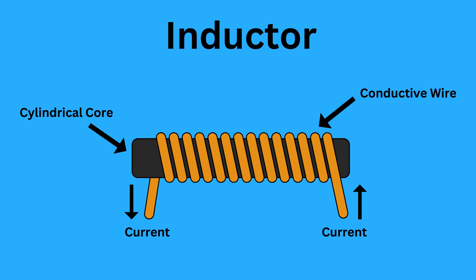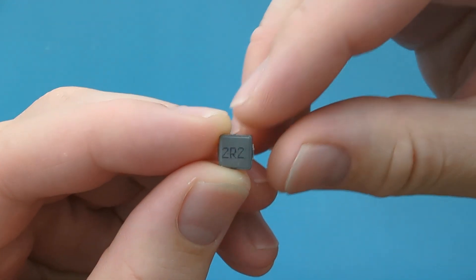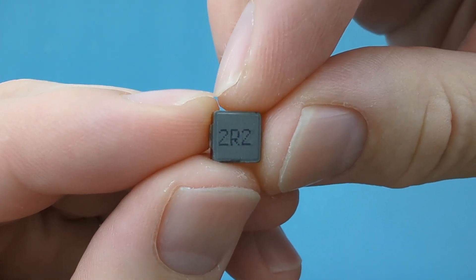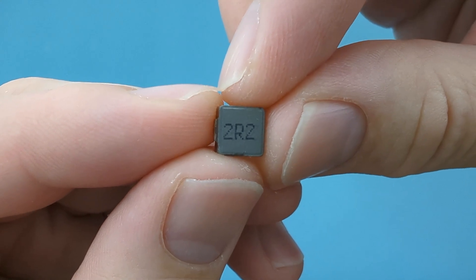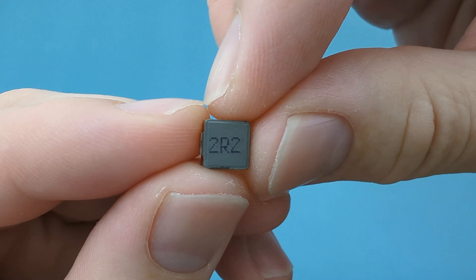There are two main types of inductors you'll come across, SMT and THT. SMT or surface mount technology inductors are mounted directly onto the surface of a printed circuit board or PCB. They have no leads and are typically smaller in size, making them ideal for compact electronic devices like smartphones and laptops.